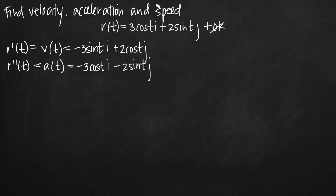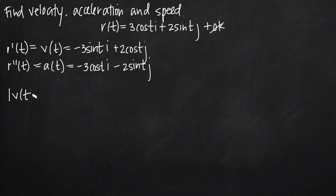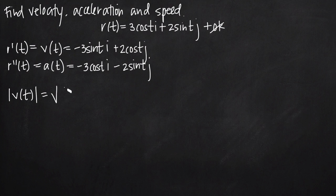Now we just need to find speed. Speed is found by taking the magnitude of our velocity vector. So now that we have both vectors, we can find speed — it's just the magnitude of velocity, or the magnitude of our first derivative.